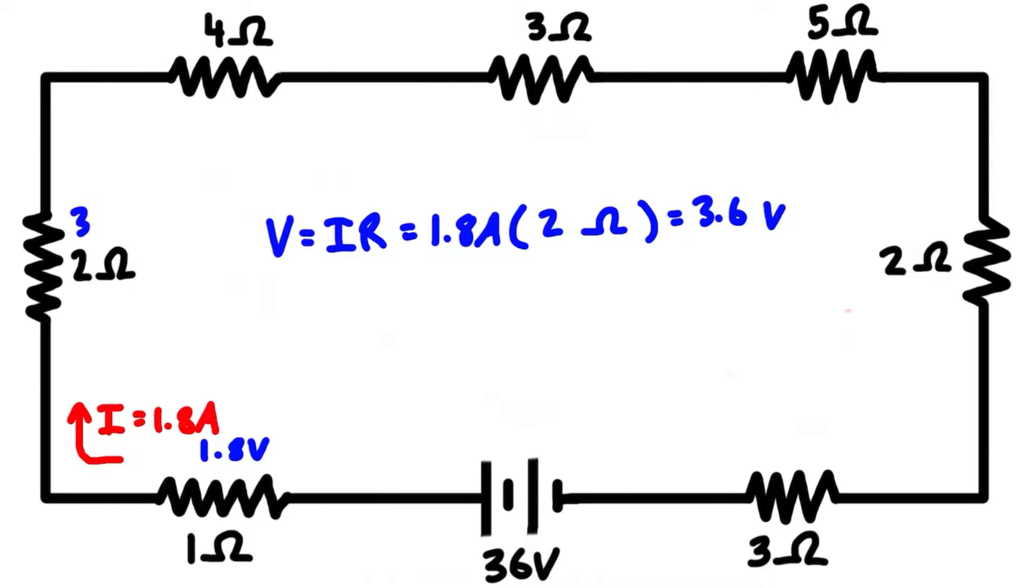The next one is 4 ohms, so 1.8 times 4 is twice as big as the previous one—that gives us 7.2 volts.